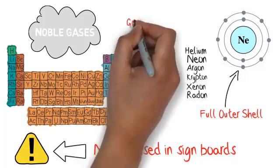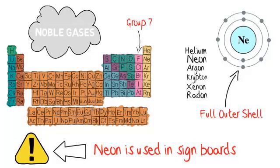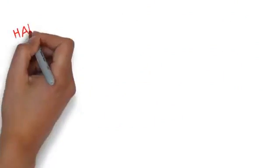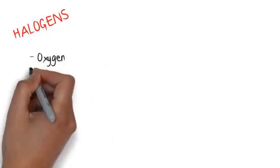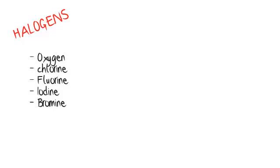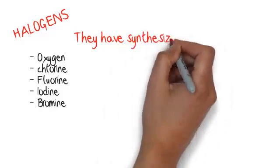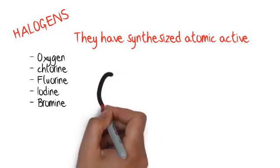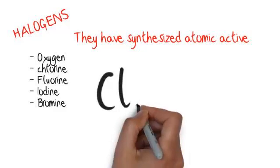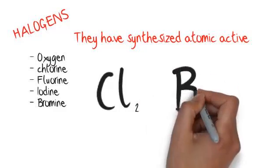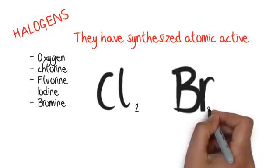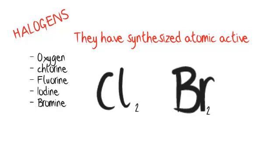The halogens which make up group 7 are a bit more unstable than the noble gases. They are made up of oxygen, chlorine, fluorine, iodine, and bromine. They have diatomic activity which means they go around in pairs, for example Cl2, Br2. The reason they do this is because they have a free electron which allows them to covalently bond to themselves.